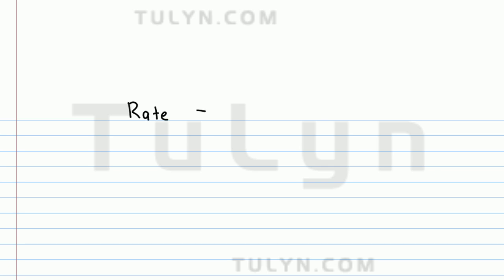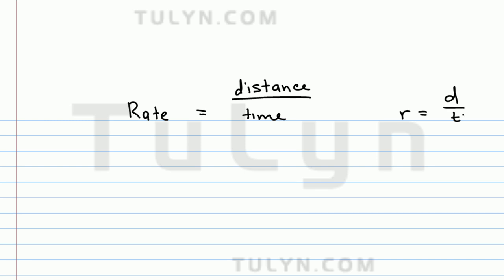An important formula in mathematics is known as the rate equation. Rate, or speed, or velocity of a moving vehicle is equal to the distance that it traveled over the time that it took the vehicle to travel such distance. To shorten it, we usually write it R is equal to D over T. The best way to remember it is to think about cars or any sort of vehicle — speed is given by miles per hour, or distance over time.